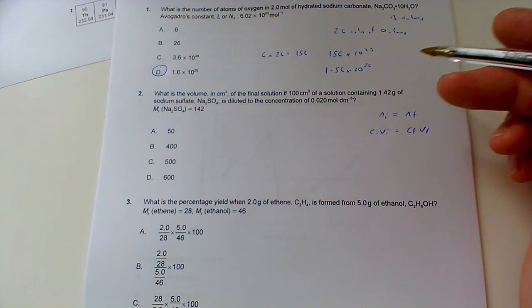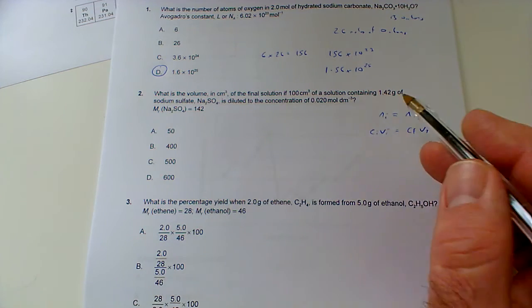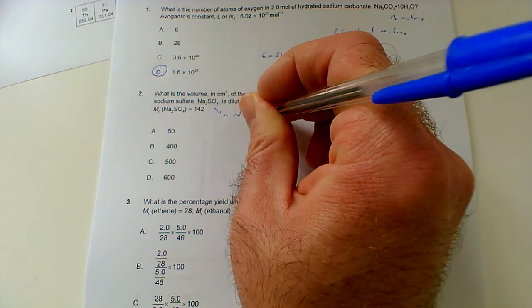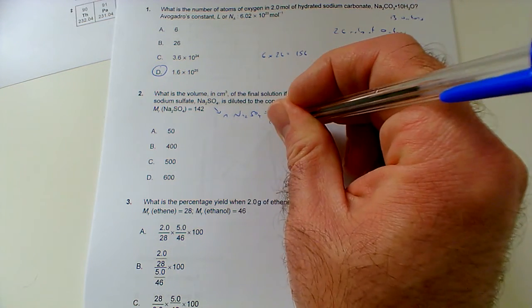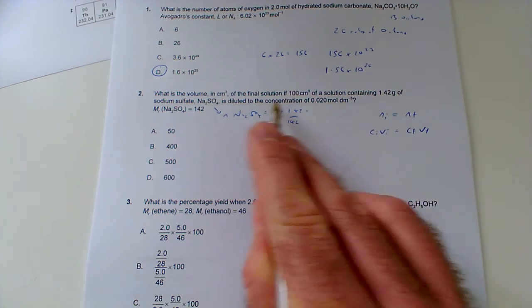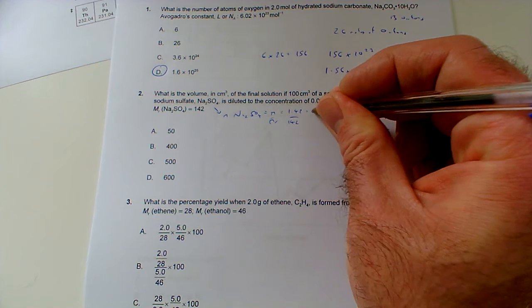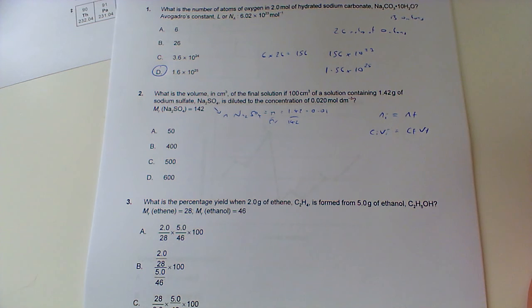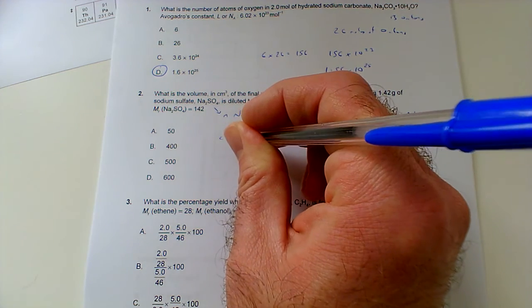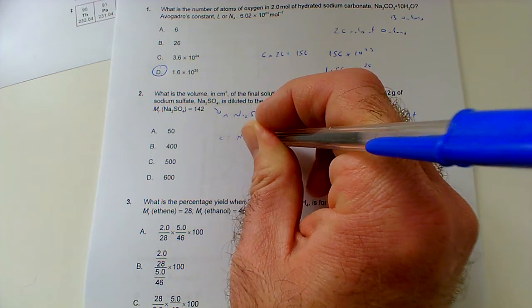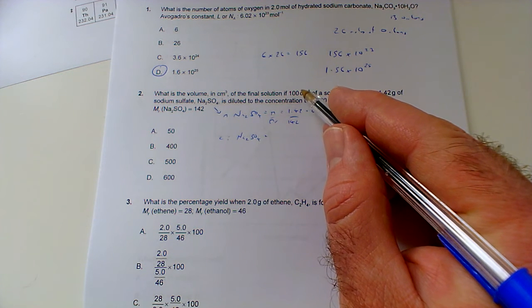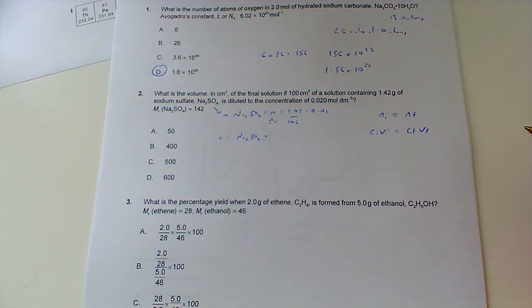If we know the final concentration, we know the initial volume, we're going to need to know the initial concentration. So if we work out the initial concentration, how many moles of sodium sulfate have we got? Well it's 1.42 grams divided by 142. So our N of sodium sulfate is M over MR, that's 1.42 divided by 142. Now we can see that is 100 times bigger than that number, so it's going to be 0.01, because it's one hundredth of it.